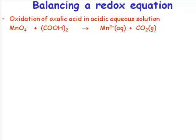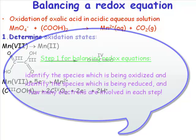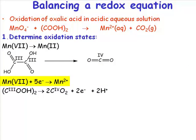The first step in balancing a redox equation is to recognize what species is being oxidized, how many electrons are involved in that step, and which species is being reduced, and how many electrons are involved in that step. We've got manganese 7 plus 5 electrons goes to manganese 2, and we have our oxalic acid going to carbon dioxide and 2 electrons.